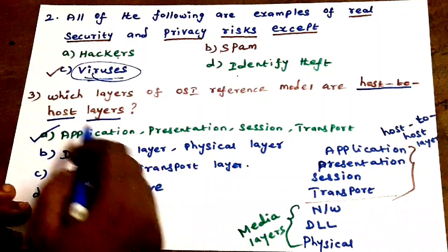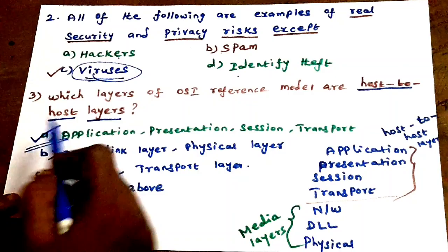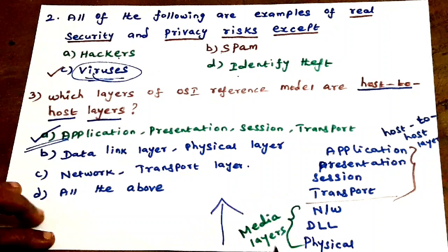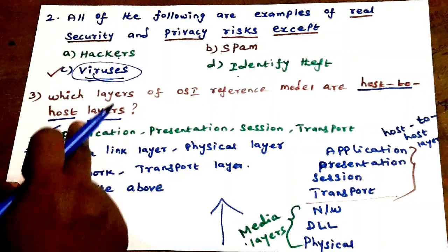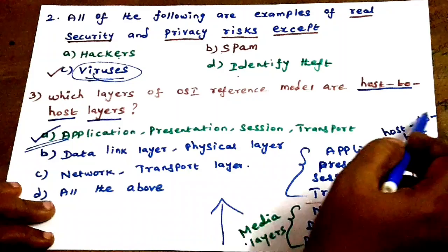OSI model question: Which layers of the OSI reference model are host-to-host layers? The OSI model has 7 layers. The concept of host-to-host layers is the idea of this question. The first three layers are media layers.